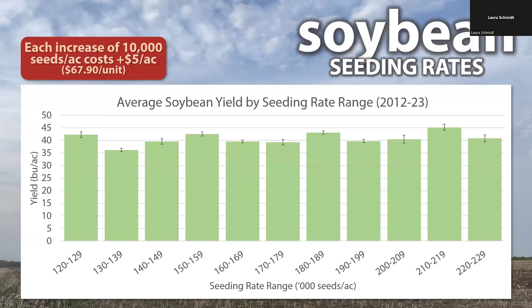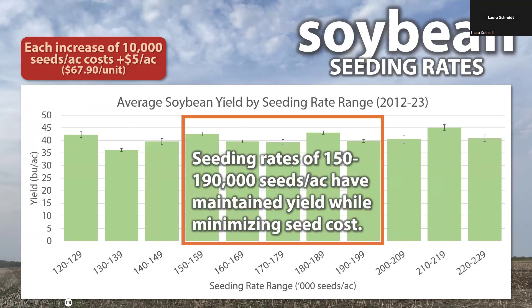Here is the average yield for each of those different seeding rates. There's really nothing much emerging in terms of a yield-to-seeding-rate relationship. We can say that seeding rates of 150 to 190,000 seeds per acre have maintained soybean yield while minimizing soybean seed cost, which makes sense considering these are the seeding rates getting us to those target plant stands.